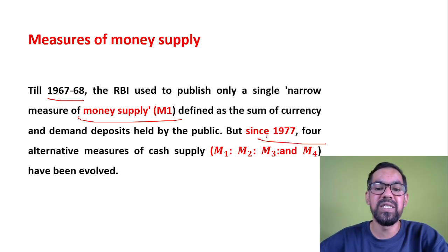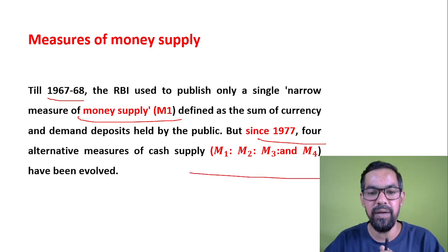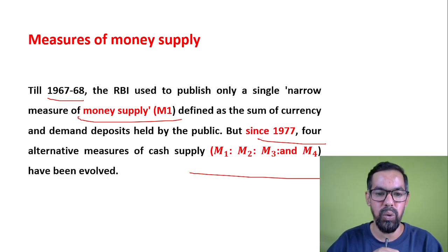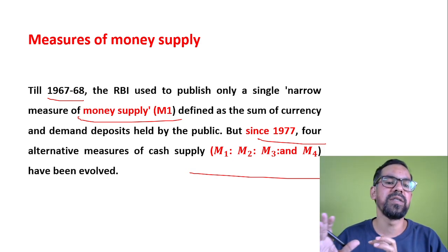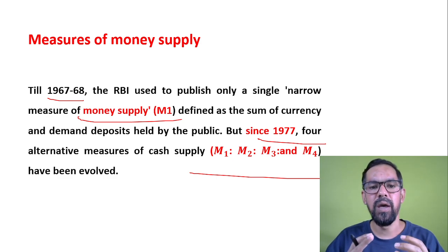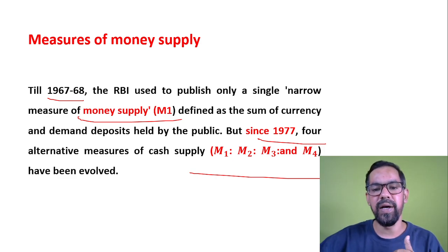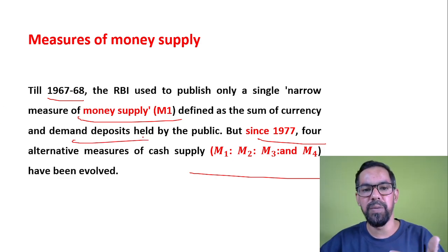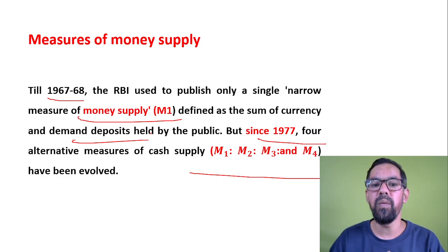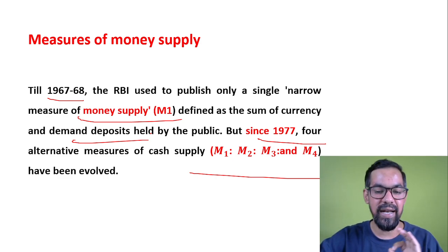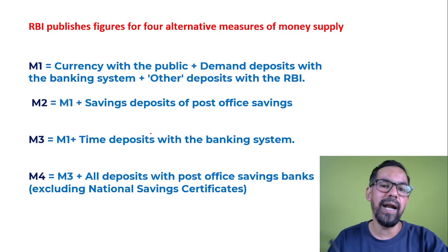Since 1977 onwards, we have four alternative measures of money supply: M1, M2, M3, and M4. Before 1966–68, we did not have an effective system to measure all things, so we only used demand deposits and cash held by the public. But now, since 1977, RBI represents data in all four measures.